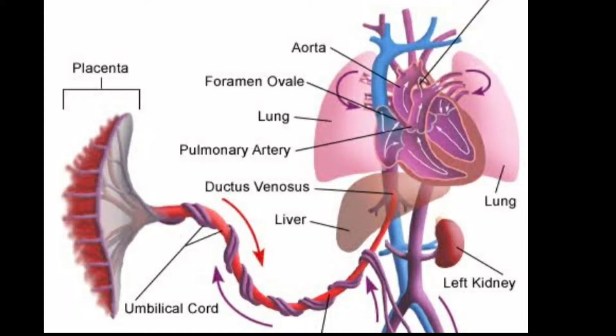Assalamu alaikum. Today we are going to discuss the fetal heart on ultrasound and its different parts — that is atria, ventricle, and the septum. This picture shows you the circulation of the heart through the umbilical arteries and the umbilical vein. You can see the atria and ventricle separated by the septum.